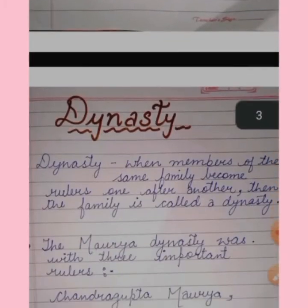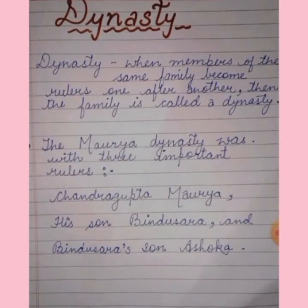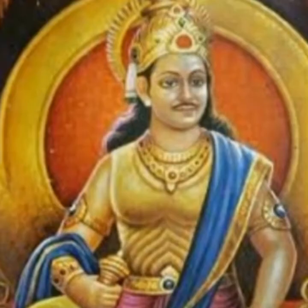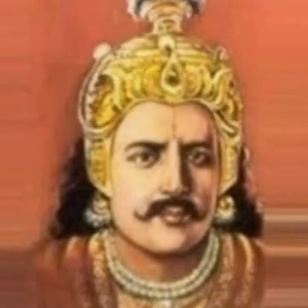Now we will look at how the Maurya dynasty worked. A dynasty is when members of the same family become rulers one after another. The Maurya dynasty had three important rulers: the first was Chandragupta Maurya, who was succeeded by his son Bindusara, who was finally succeeded by his son Ashoka.